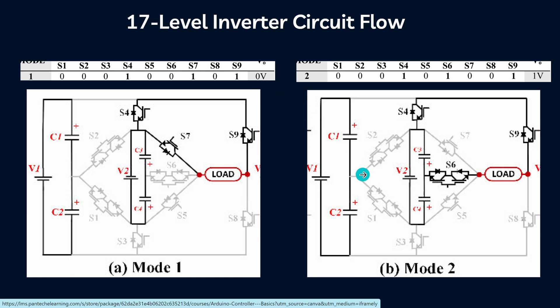In mode 2, S4, S6, and S9 are ON. These 3 devices are ON, and at that time we will get the 2nd level.